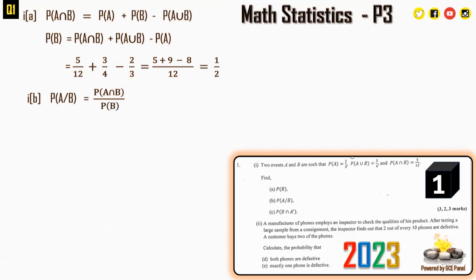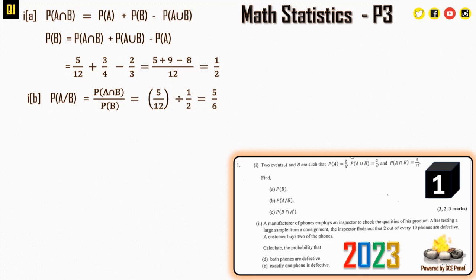For part (b), the probability of A given B is P(A ∩ B) divided by P(B), which equals 5/12 divided by 1/2, giving 5/6. With these two parts you have already scored 5 marks.